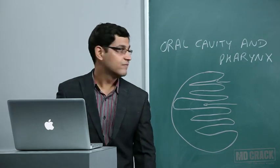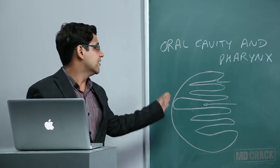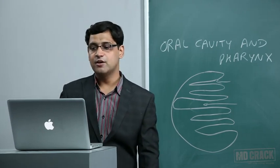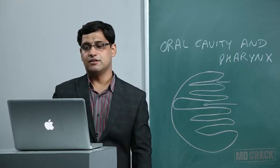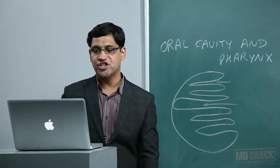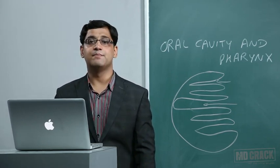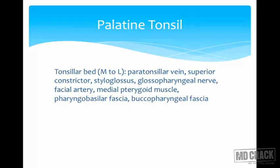The tonsillar bed is the lateral part of the tonsil. Important structures present from medial to lateral are: paratonsillar vein, superior constrictor muscle, styloglossus, glossopharyngeal nerve, facial artery, medial pterygoid muscle, pharyngobasilar fascia, and buccopharyngeal fascia. This order from medial to lateral is important for MCQs.